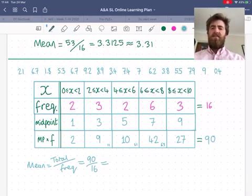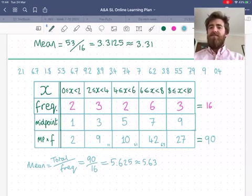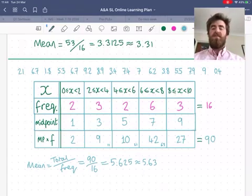is 5.625. Or, again, in IB, we round it to three significant figures, 5.63. There will be no point being too specific there because this was an estimate overall, after all. That is how to find an estimate for the mean from a grouped frequency table.